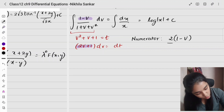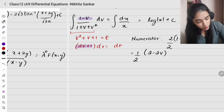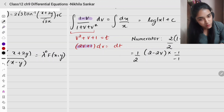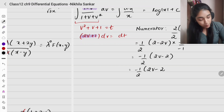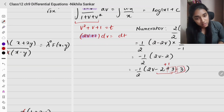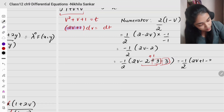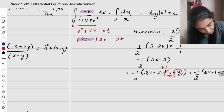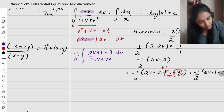We write 1 - v = (-1/2)(2v - 2). To get 2v + 1 in the numerator, we add and subtract 3 inside: 2v - 2 = (2v + 1 - 3). So 1 - v = (-1/2)(2v + 1 - 3). This allows us to split the integral into: (-1/2)∫(2v+1)/(1+v+v²) dv + (3/2)∫1/(1+v+v²) dv.